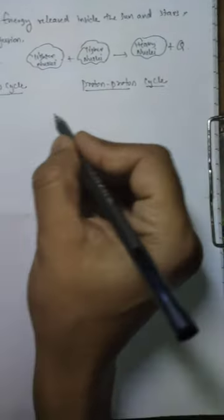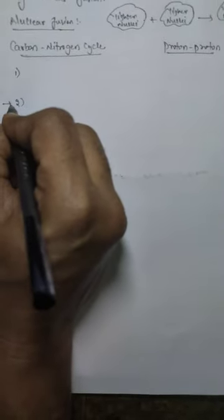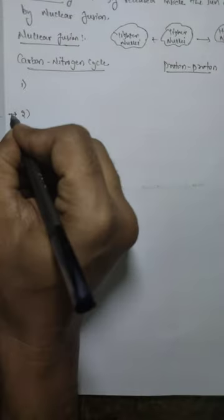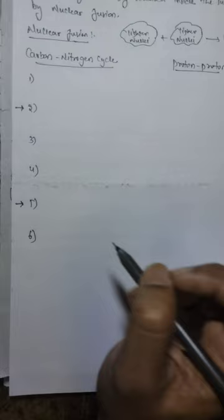I will explain how to memorize this using a simple easy method. In the carbon-nitrogen cycle, we have to take six steps — remember the six steps: one, two, three, four, five, and six. In step two and step five, I am marking an arrow mark. There is some importance about these two steps.